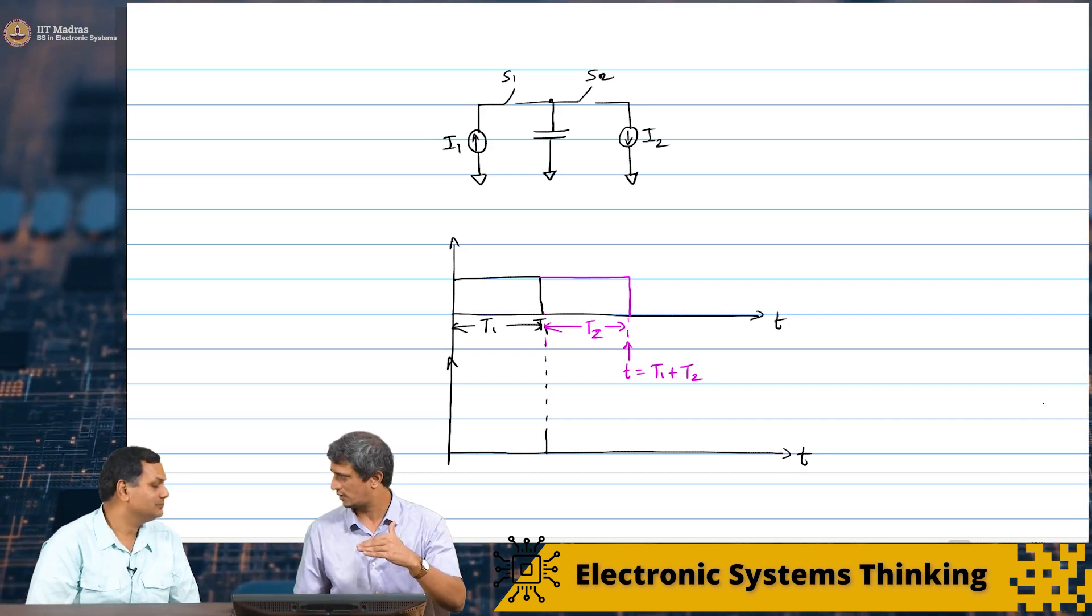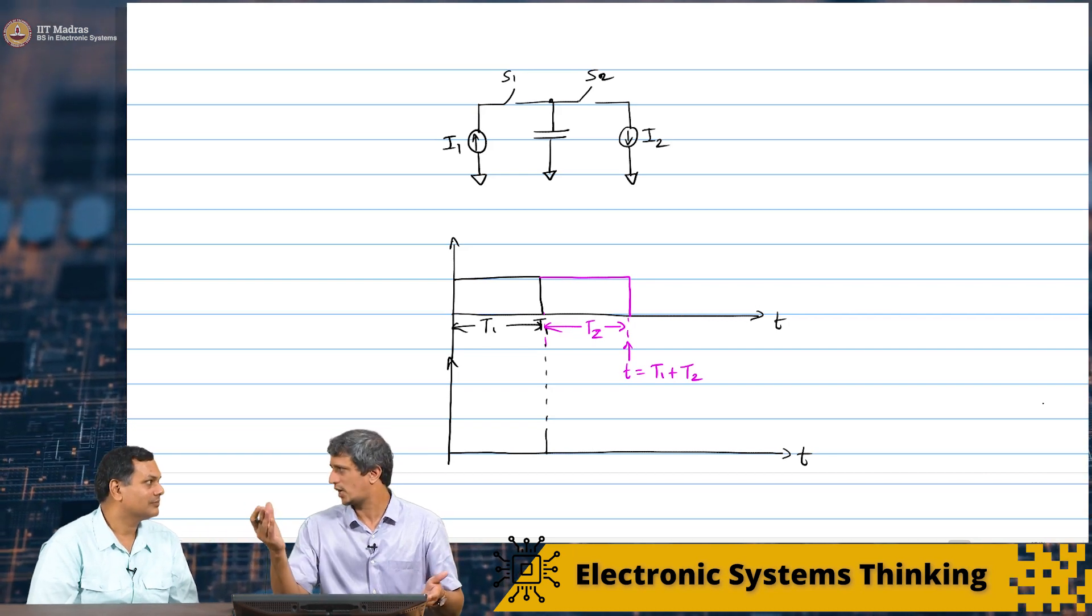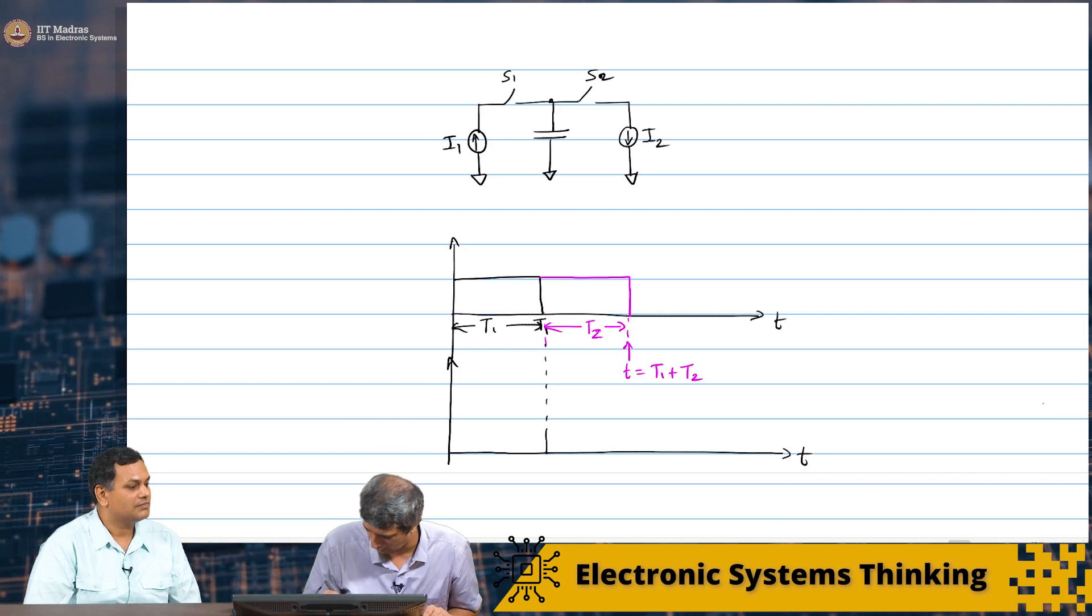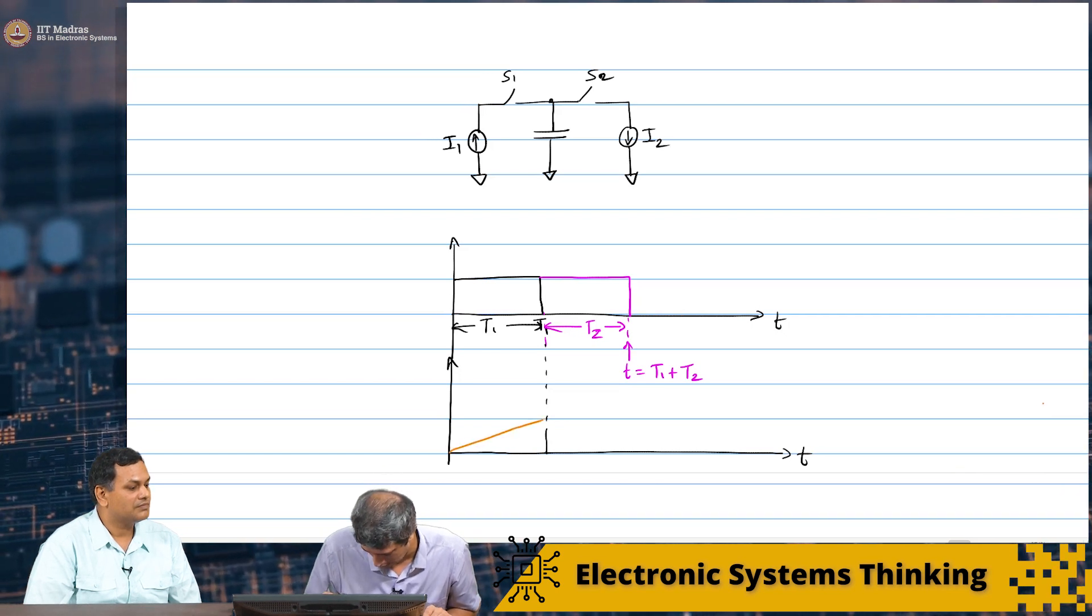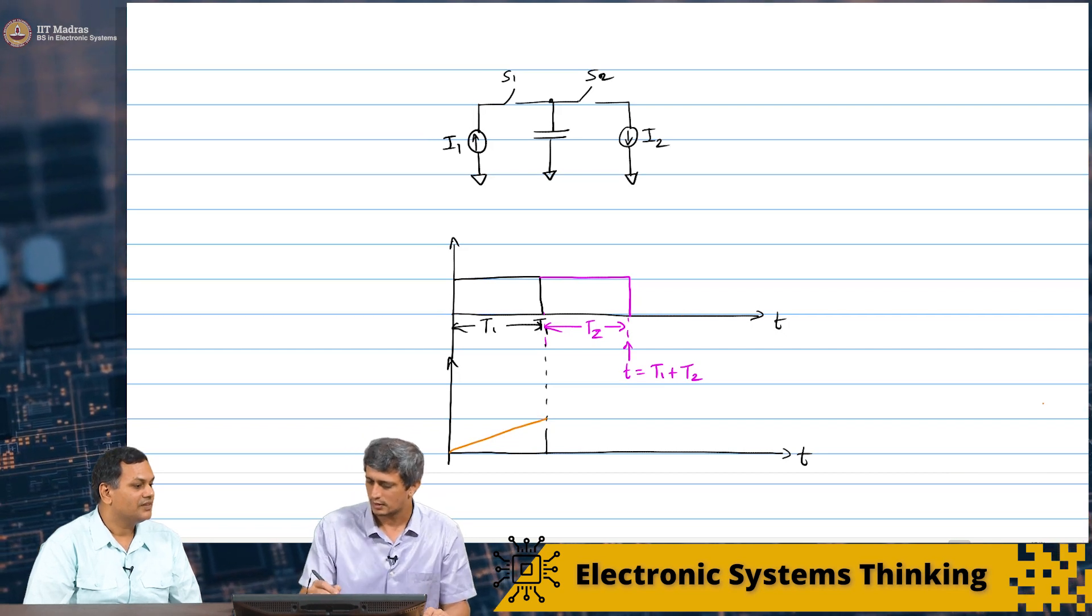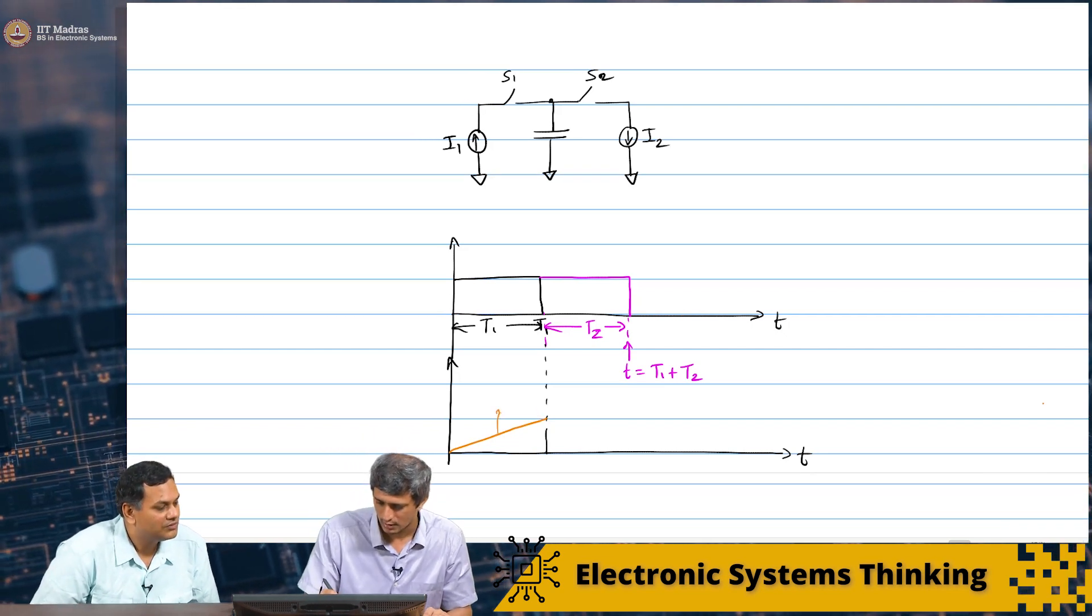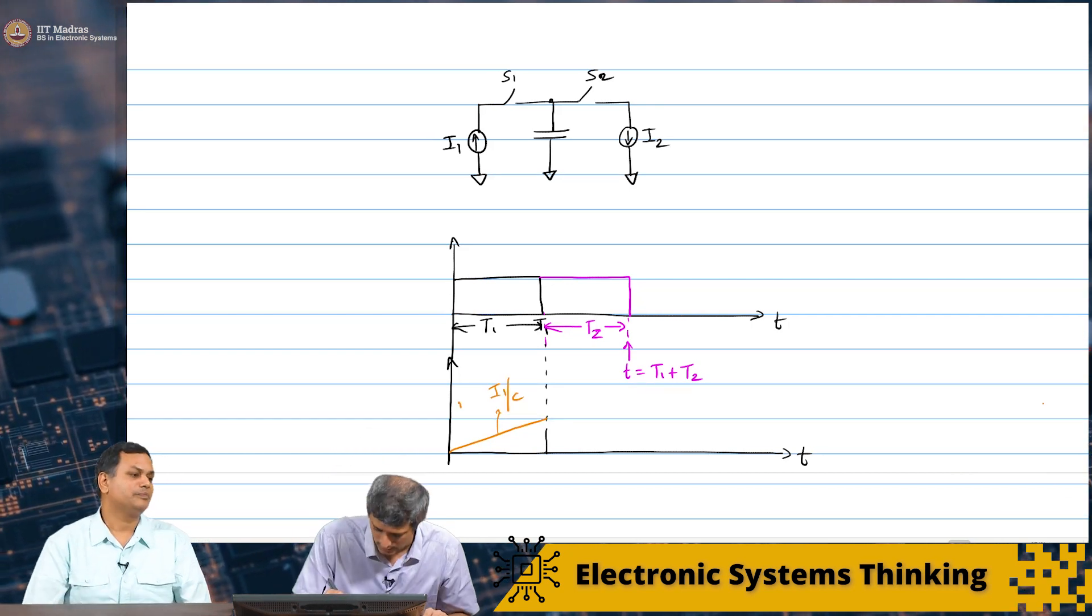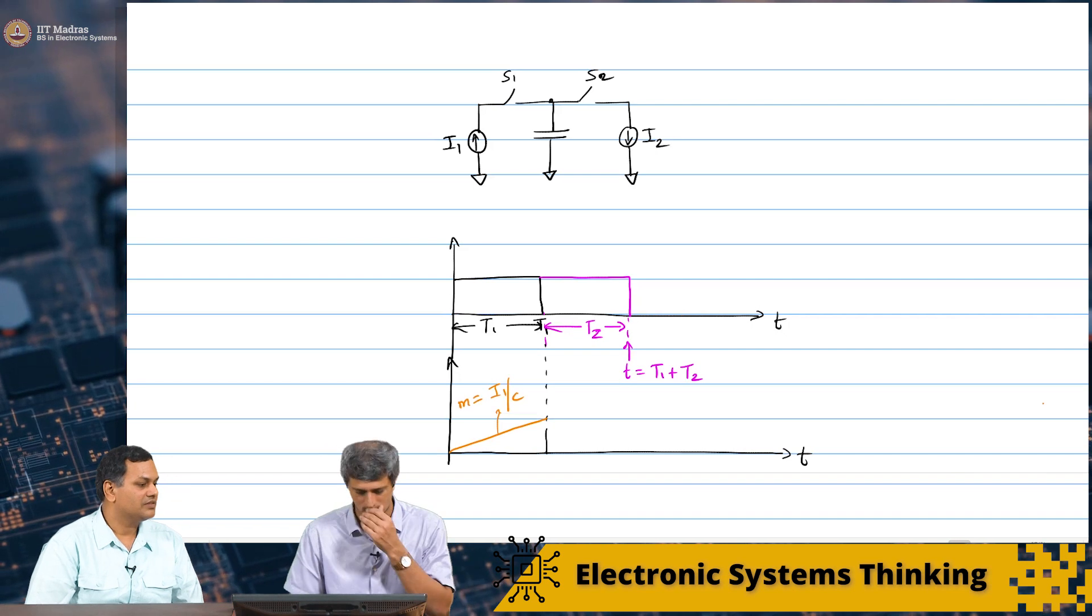So, S1 is now closed. We know it is a linear charger. It has to go linearly. It has to go linearly up to here. The slope of this will be, the slope here will be I1 by C. Exactly. This is the slope equals this.